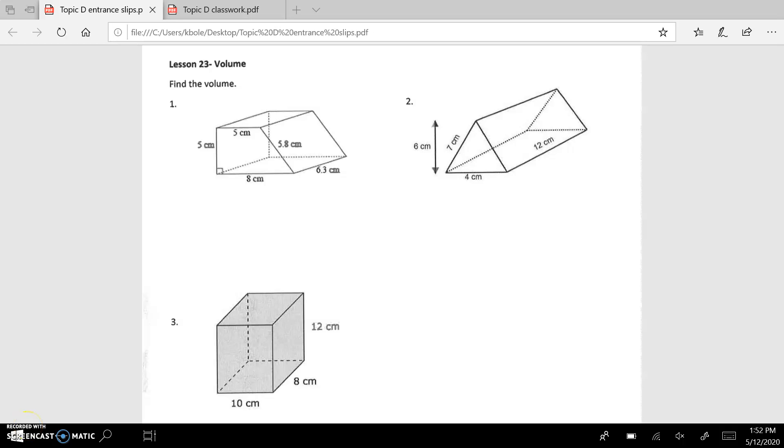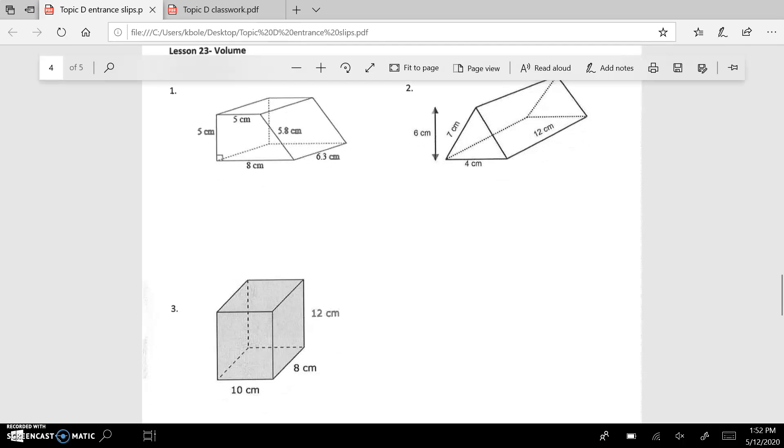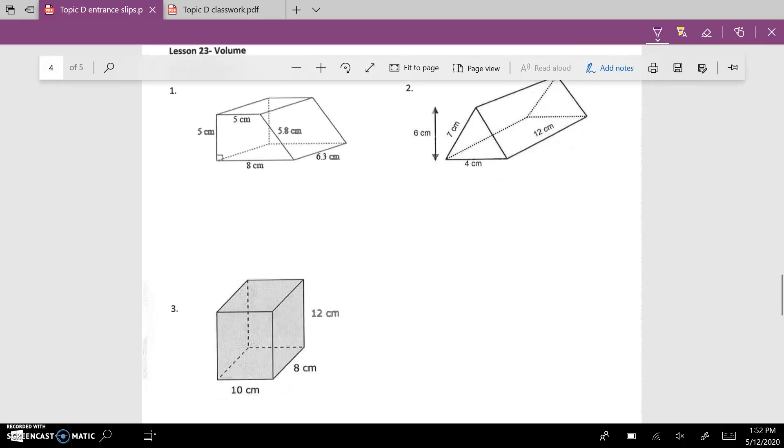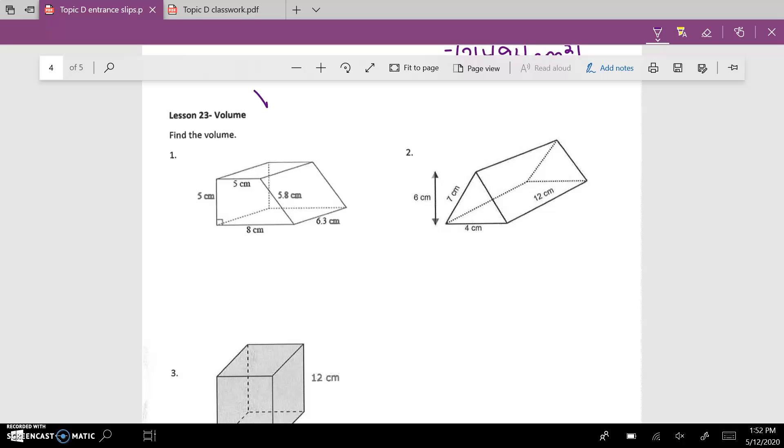All right, here we are on the lesson 23 entrance slips where the first three questions say find the volume. So remember to find the volume of any shape, the volume is the area of the base times the height.